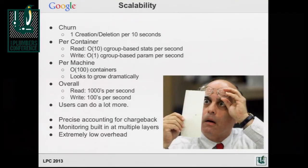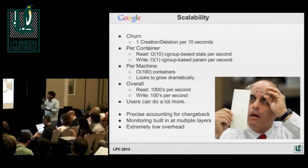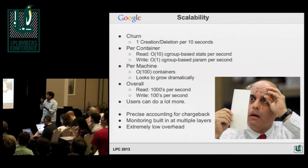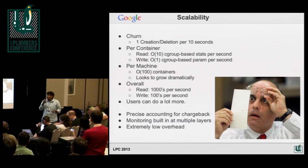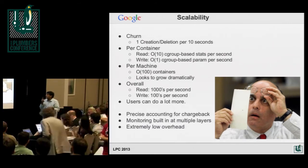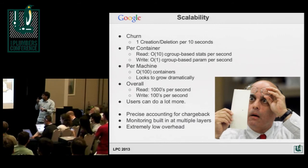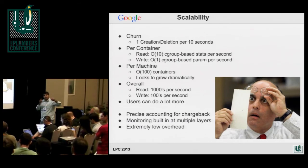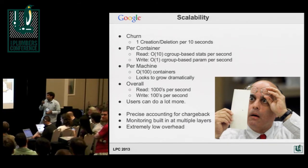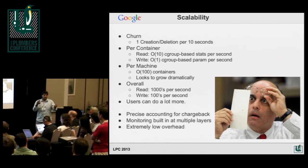This covers how many cgroup reads and writes we do per container. For every container we need to get stats every second — all the stats that it can show us. That's about 10 cgroup reads per second per container. Per machine, if we have hundreds of containers, it grows a lot and there's a lot of work to do there. We need precise accounting for chargeback so we can push it back to customers. The monitoring happens at multiple layers, and all of this has to be extremely low-overhead and parallelizable so we can get stats without blocking on one agent.